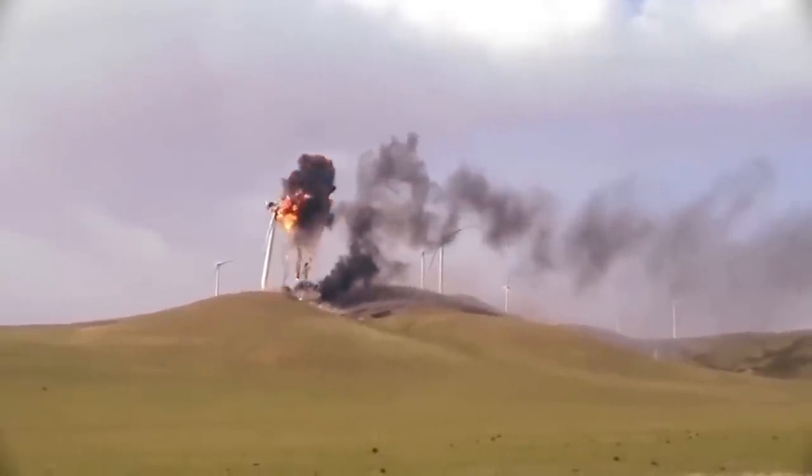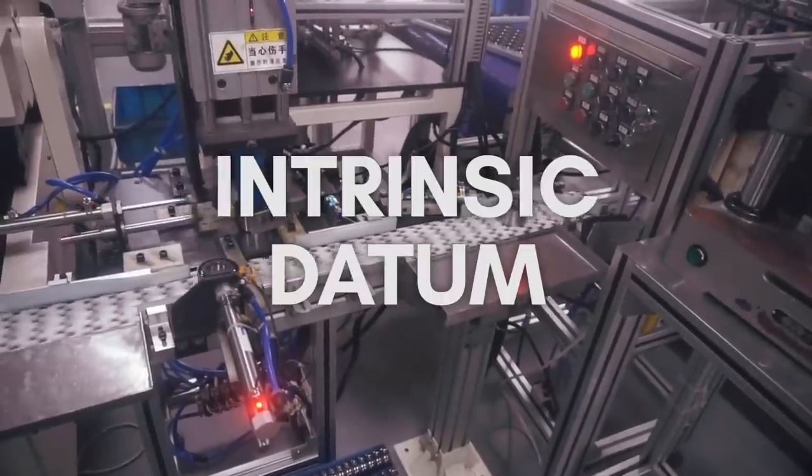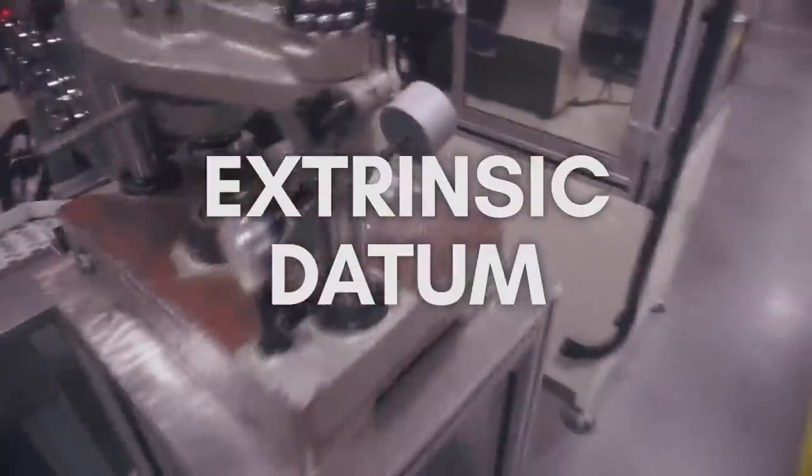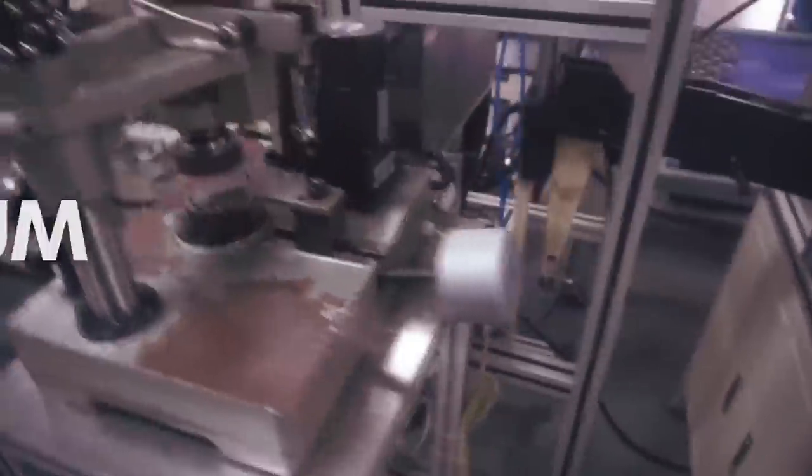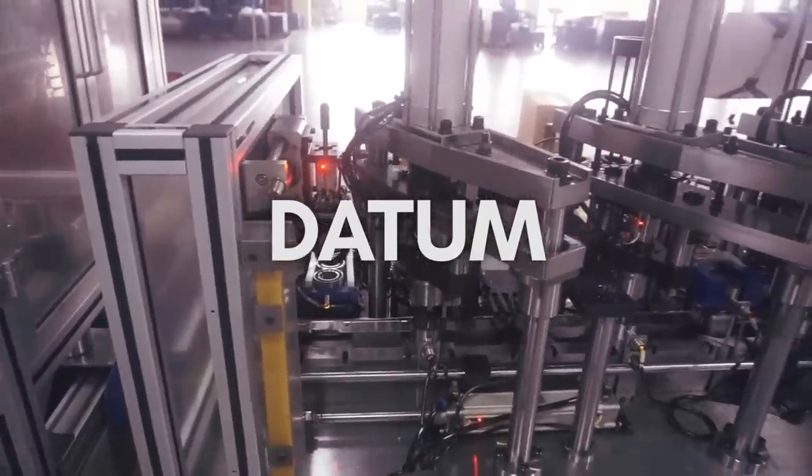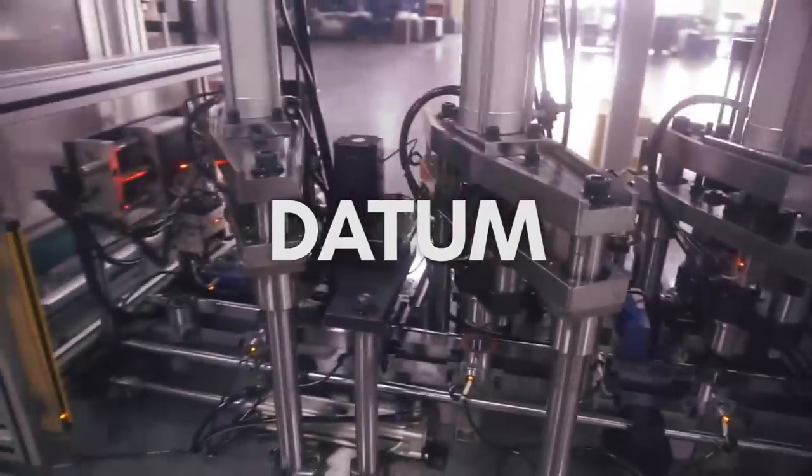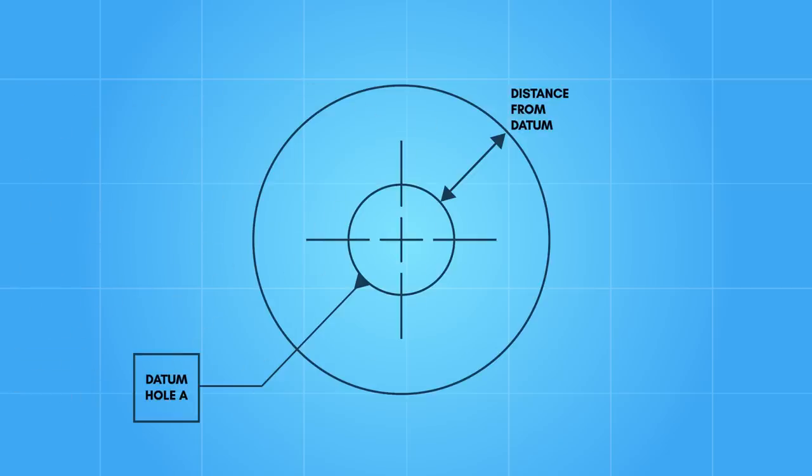Measuring a part's roundness can be classified into two categories of measurement methods: intrinsic datum reference and extrinsic datum reference. A datum reference or datum is an important feature of a part such as a point, line, plane, hole, set of holes, or a pair of surfaces. Datums serve as a reference in defining the geometry of a part and are used in measuring the geometry. Datums can be used to determine how closely a part matches a specified value.